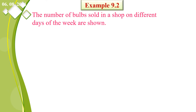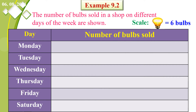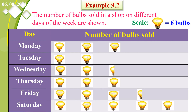Now let us see example 9.2. The number of bulbs sold in a shop on different days of the week are shown. The scale: 1 bulb represents 6 bulbs. For Monday: 3 bulbs. Tuesday: 2. Wednesday: 2 and a half. Thursday: 3. Friday: 3 and a half. Saturday: 5 bulbs.